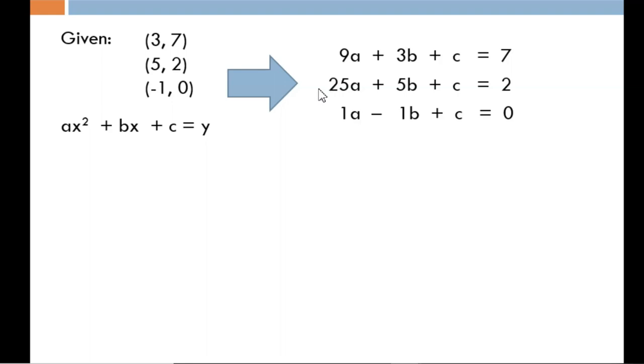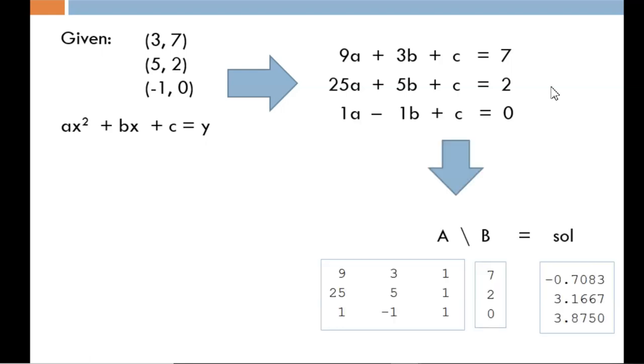Now I have a system of three equations and three unknowns. This can be solved using the same steps we have already covered. First, I create a matrix A and vector B. Then I solve as inverse of A times B. This produces this vector, which lists the values for a, b, and c.